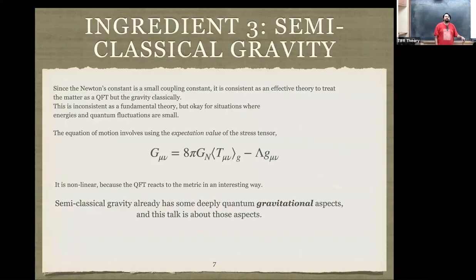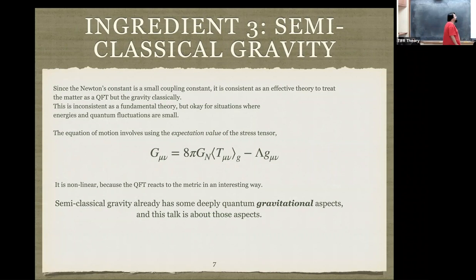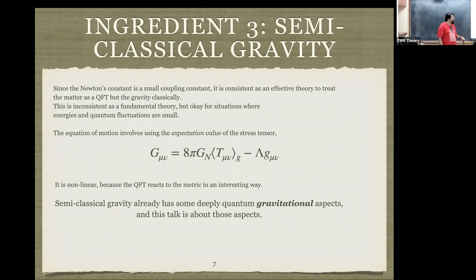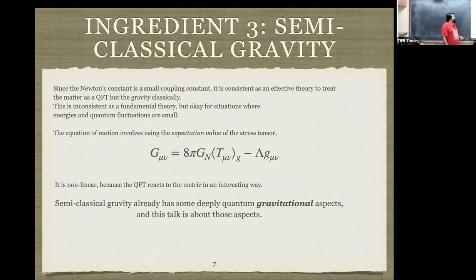The third ingredient is semi-classical gravity — a mashup of the previous two. Since Newton's constant is a small coupling constant, it is a sensible effective theory to treat QFT quantum mechanically but the metric classically. This can never be a fundamental theory — you cannot fundamentally couple a classical theory to a quantum one, because of all sorts of funny things that happen. But it's okay because the coupling constant is small, so fluctuations in gravity are suppressed compared to fluctuations in the matter fields.